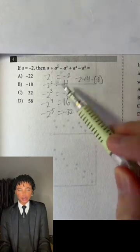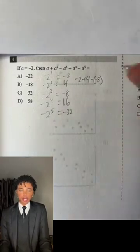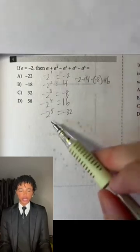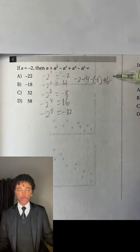and then plus a raised to the fourth power, so negative 2 raised to the fourth power, which is 16, minus a raised to the fifth power, which is going to be minus negative 32.